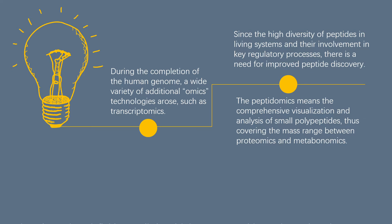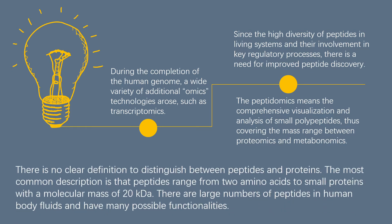There is no clear definition to distinguish between peptides and proteins. The most common description is that peptides range from two amino acids to small proteins with a molecular mass of 20 kDa. There are large numbers of peptides in human body fluids and they have many possible functionalities.